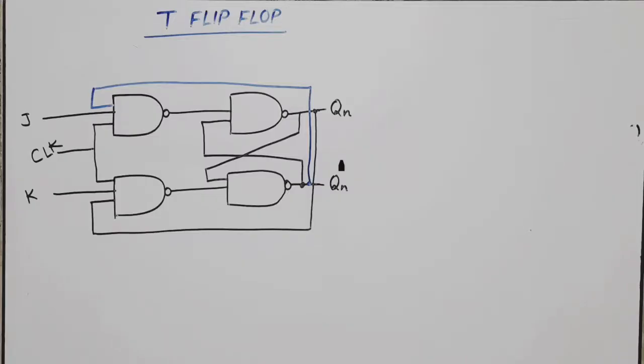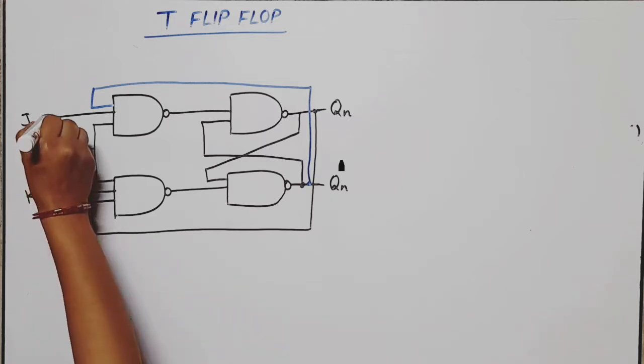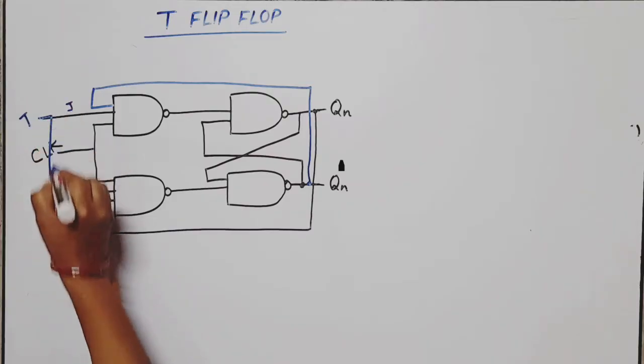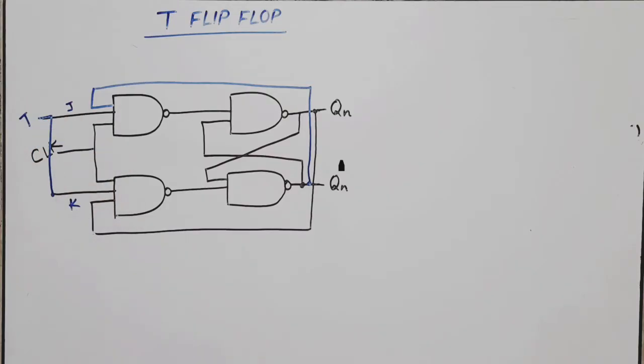Hello everyone, in this video lecture of digital electronics or digital system design, I am going to discuss T flip-flop. T stands for toggle flip-flop or trigger flip-flop. Now, T flip-flop is basically made from JK flip-flop. What is the difference between JK and T? In JK, there are two inputs, J and K, while in case of T, both inputs are shorted, meaning J and K are connected, and we apply T to both J and K. So this is the main difference.